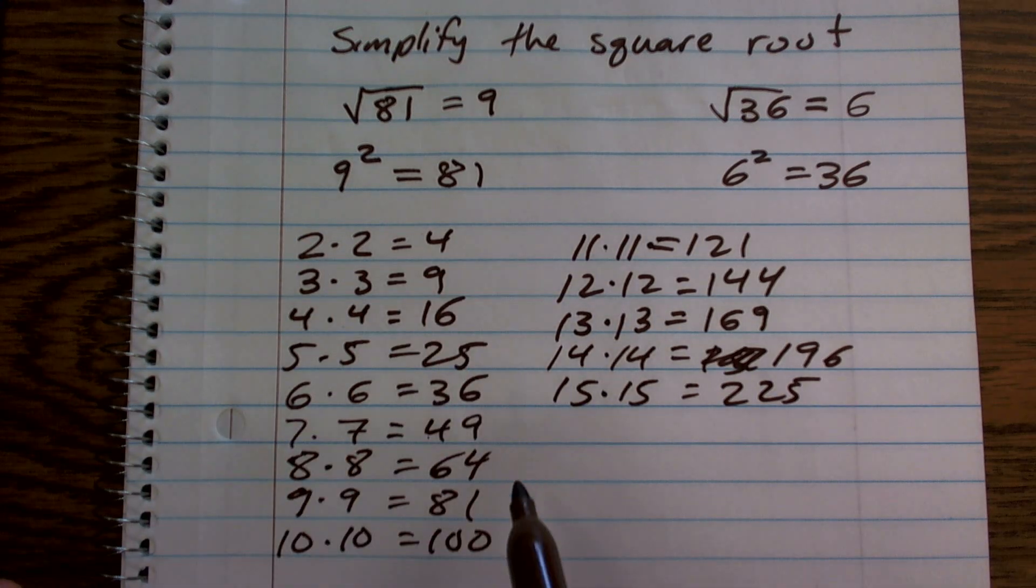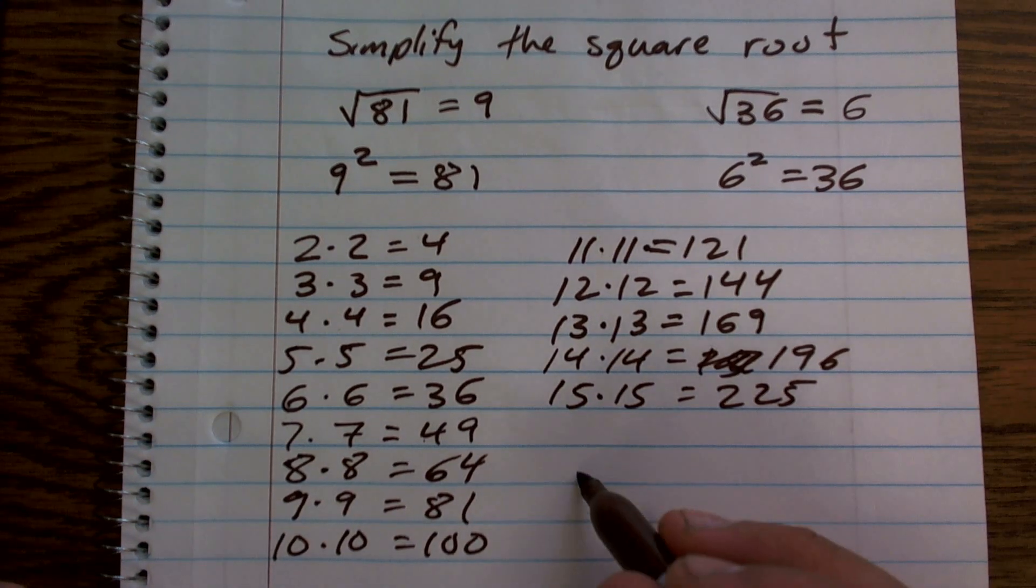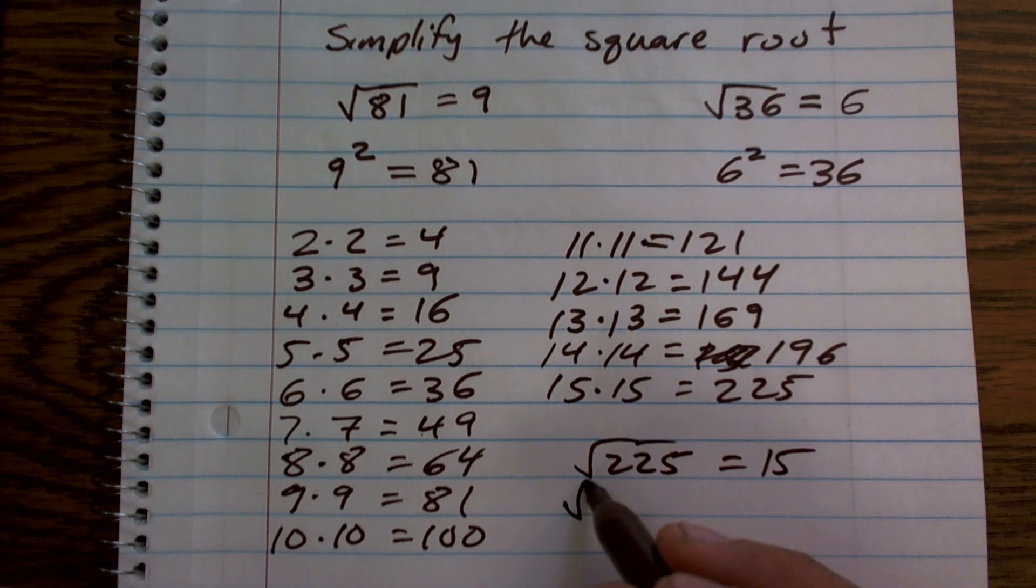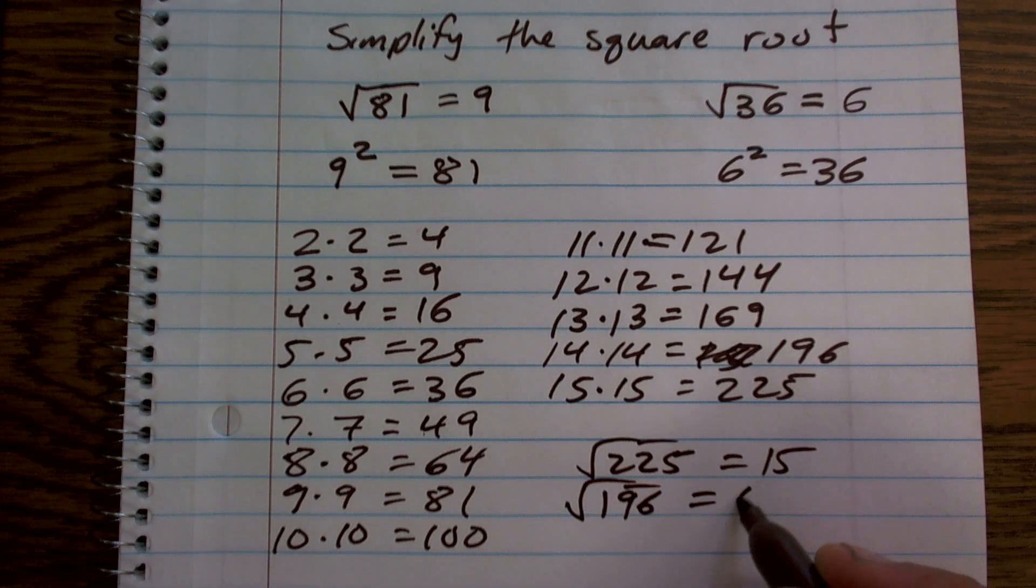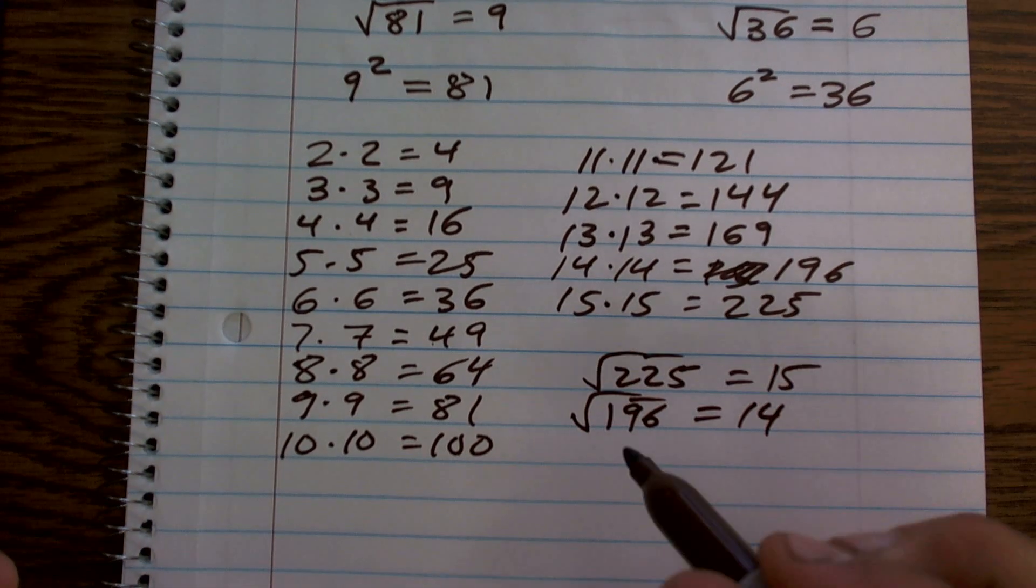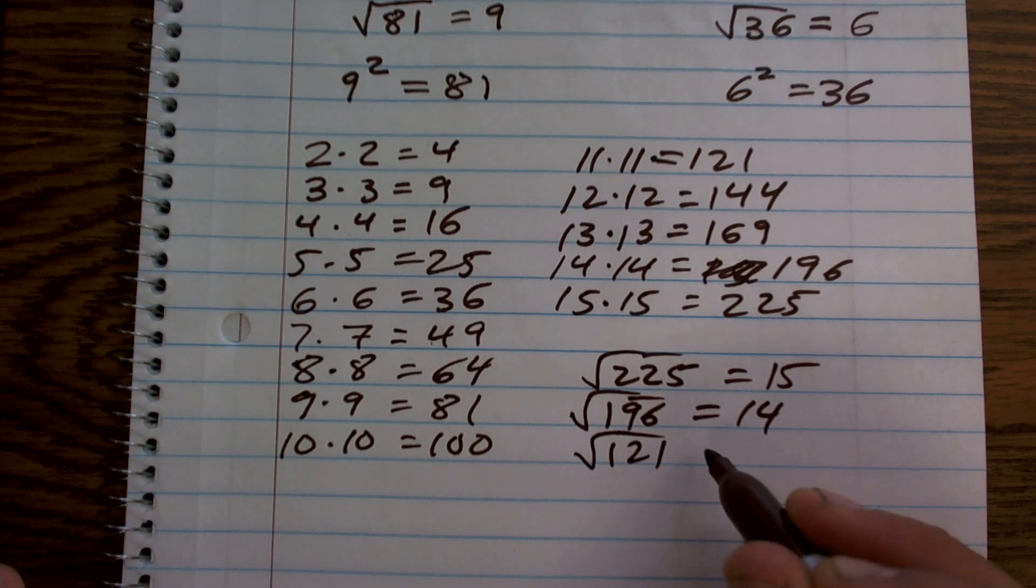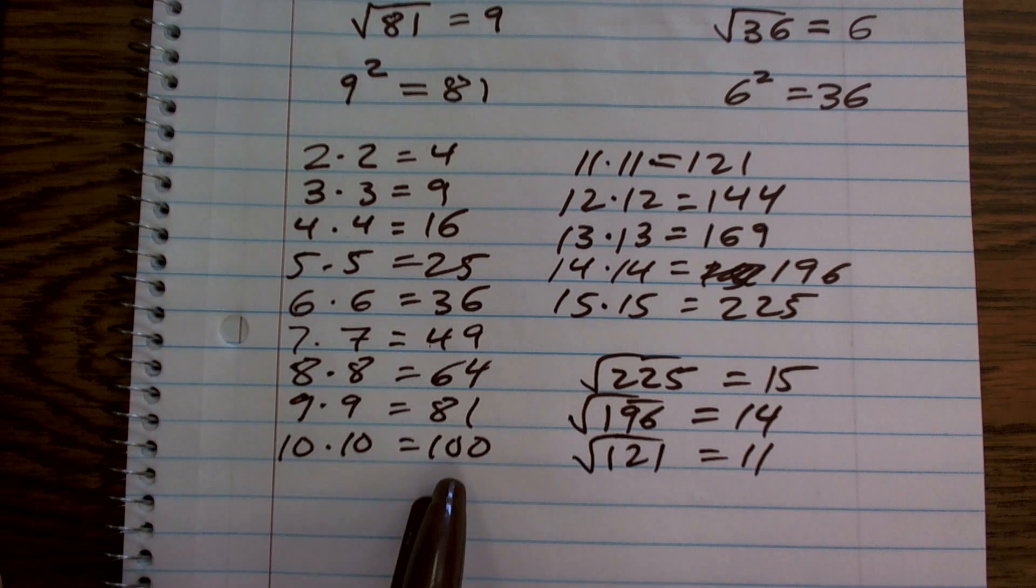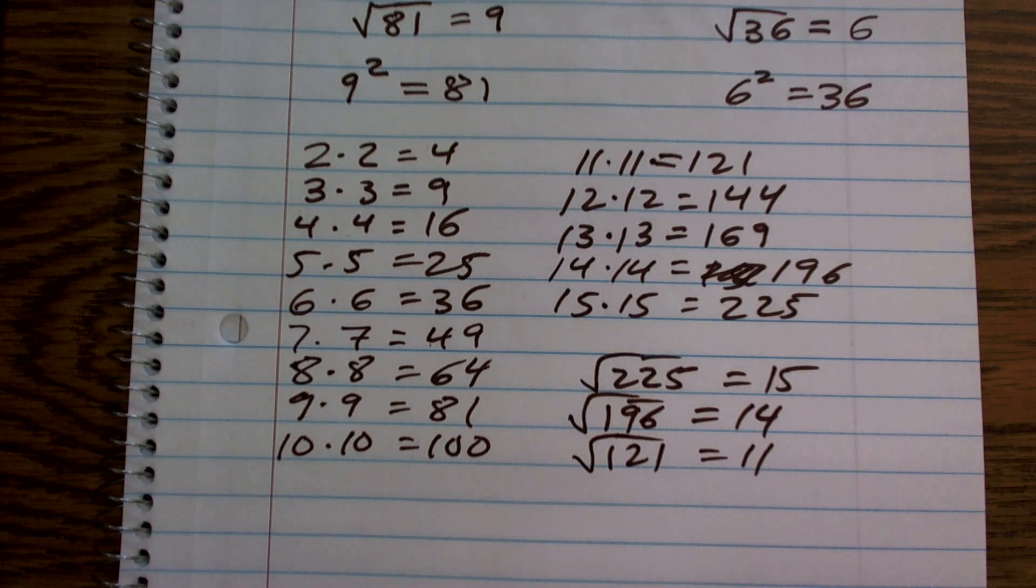So what I mean by, so these are all square numbers, so therefore I can say square root of 225, oh, that equals 15, right? Square root of 196 equals 14. Square root of 121 equals 11, okay? You should be able to do those that quickly. So get these numbers memorized so you can be able to do that.